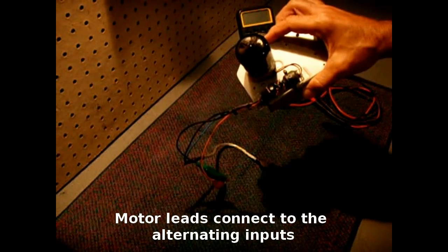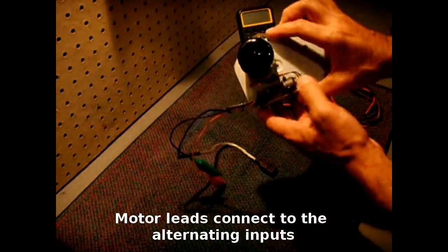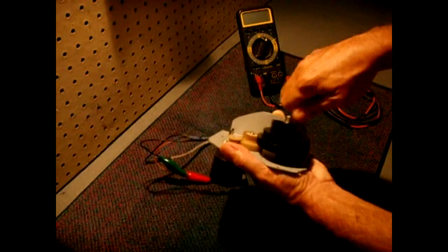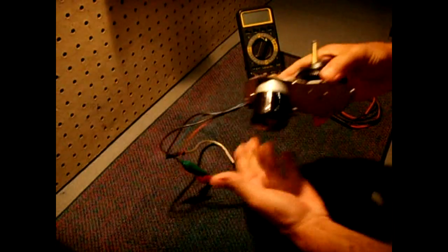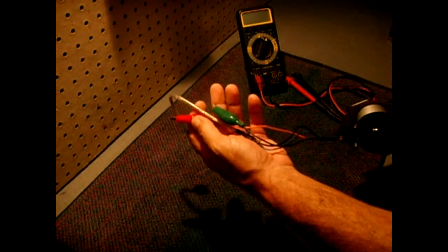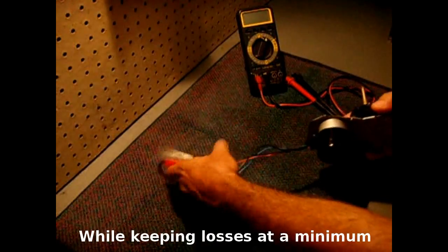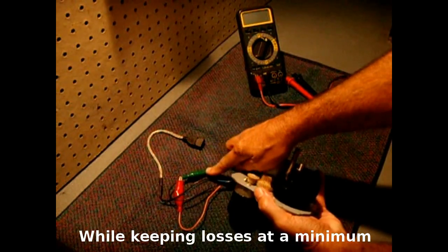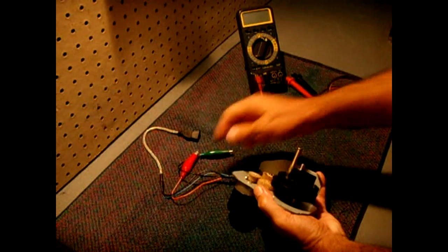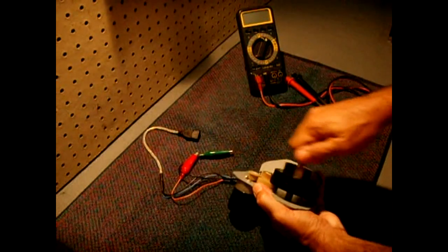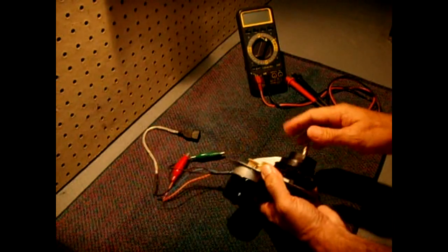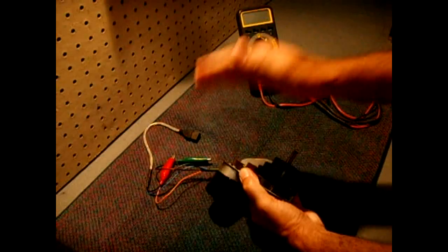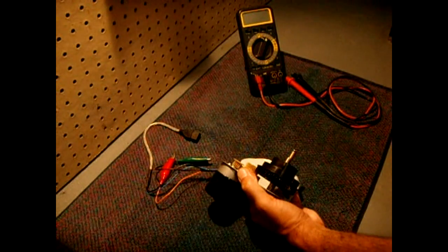The purpose of using the bridge rectifier in this fashion is to allow me to turn the generator clockwise or counterclockwise and still have positive where it's supposed to be and negative. Ordinarily if you turn it backwards this will become positive and the red one will become negative. If you go forward then you'll have positive here and negative there. I want to have it that regardless of the way that you turn the motor you always have the same polarity in the right spot.